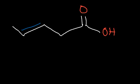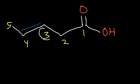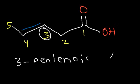What if we have an alkene present? How will that affect the name of this compound? You want to count the longest chain and assign the carboxylic acid carbon as number 1 — you always start counting from the carboxylic acid. The alkene is between carbons 3 and 4. You pick the lower number, which is 3. So this is going to be called 3-pentenoic acid. Anytime you have a carboxylic acid, you add the suffix -oic acid.